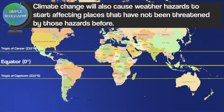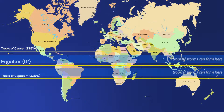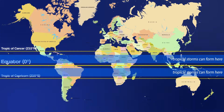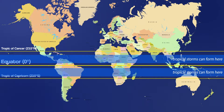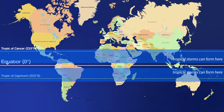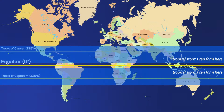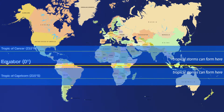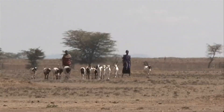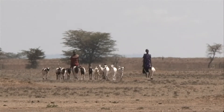Another way climate change can affect risk is by causing those hazards to start affecting places they haven't affected before. For example, tropical storms need sea temperatures of 27 degrees Celsius or higher to form. If the planet continues to get warmer, more parts of the ocean will reach that critical temperature, allowing tropical storms to form in more places and travel further without losing their strength. This means some places that previously never had to worry will now be increasingly at risk from tropical storms — and the same goes for flooding, drought and several other hazards.